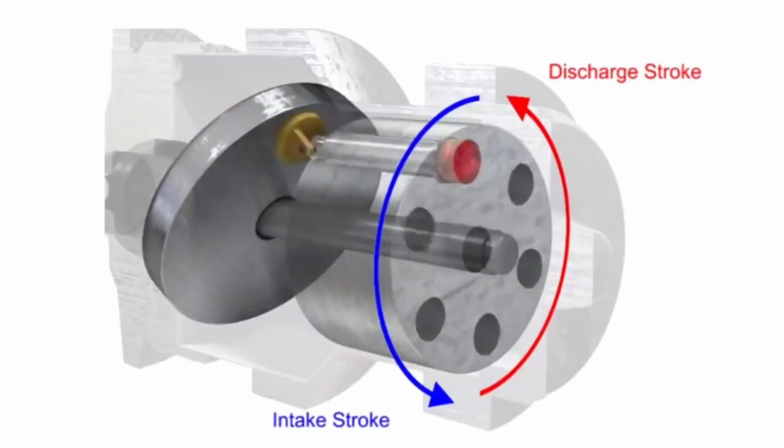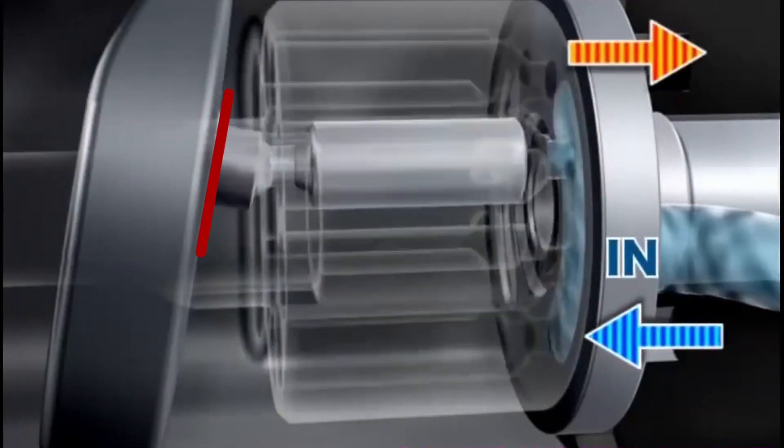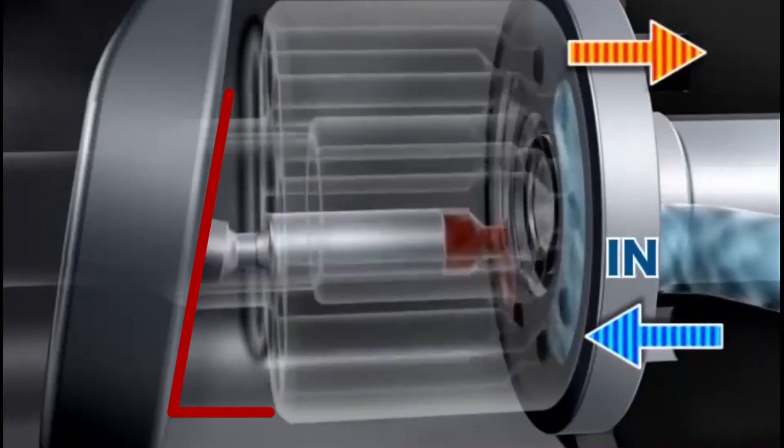The greater the angle of the swash plate, the further the pistons move and more fluid they move. Higher swash plate angle means greater displacement.